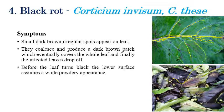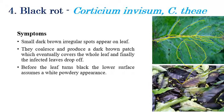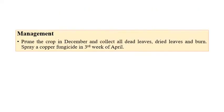In stage one of black rot, small spots or dots appear in the midrib region and on the leaf surface. In later stages, the infected leaves are totally converted into black color — initially on the lower surface, with powdery growth also observed. Eventually the entire leaf turns black and droops off.